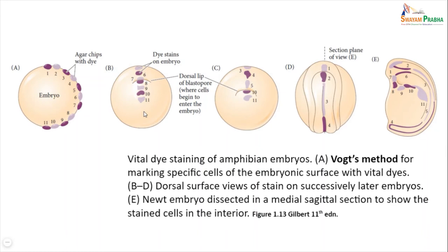The diagrams B through D show dorsal surface views of the stain on successive later embryos, and diagram E shows a nude embryo dissected in medial-sagittal section to show the stained cells in the interior. By marking several areas simultaneously with different colored dyes, it is possible to continuously follow the movement of stained cells during gastrulation. Cellophane has also been used in place of agar in subsequent experiments.